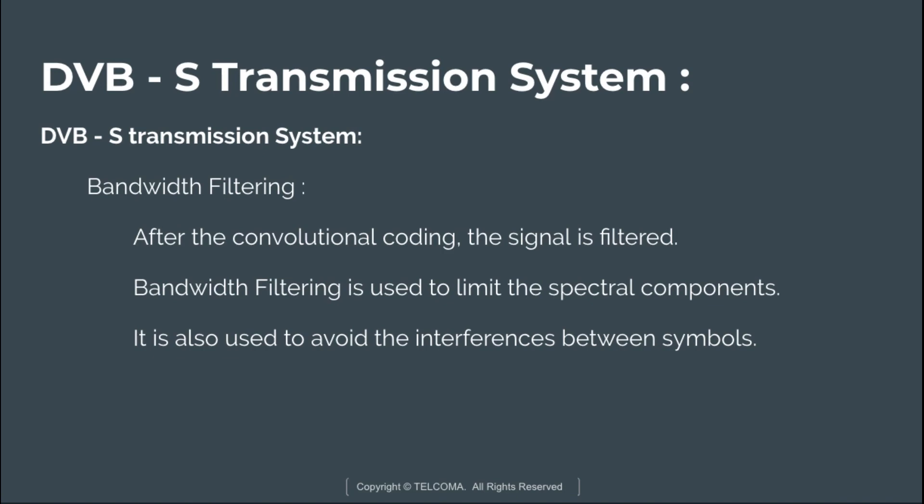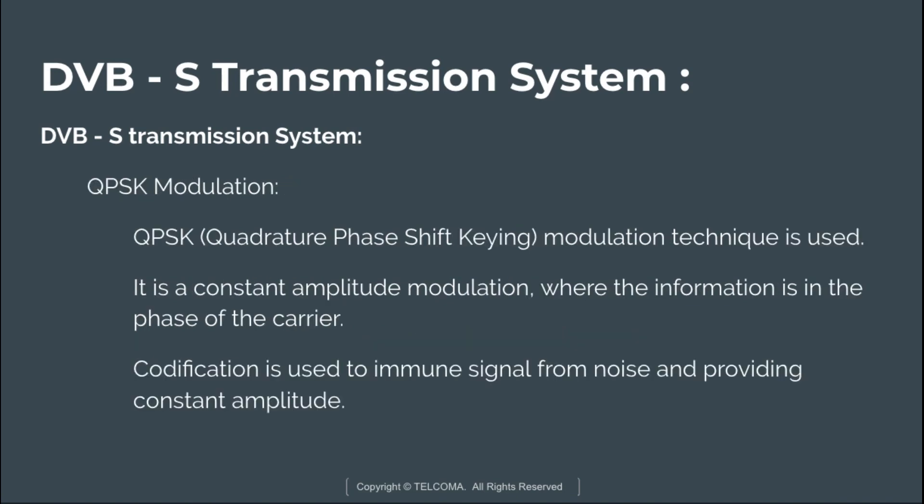The final step is QPSK modulation. QPSK stands for Quadrature Phase Shift Keying. This modulation technique makes the signal robust enough for the channel. It is a constant-amplitude modulation where the information is carried in the phase of the carrier, and it has a reduced bandwidth. In satellite signal transmission the signal travels great distances, resulting in significant attenuation, so QPSK modulation is used to reduce the impact of that attenuation on the signal.